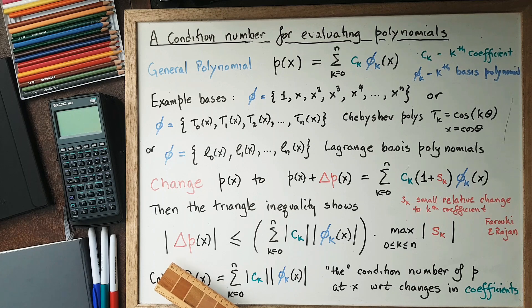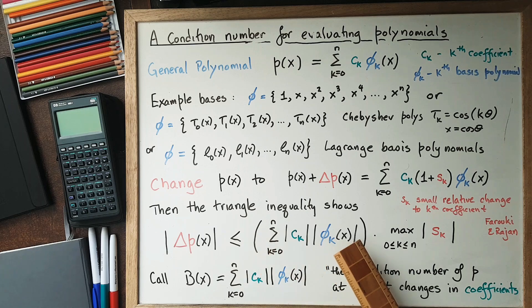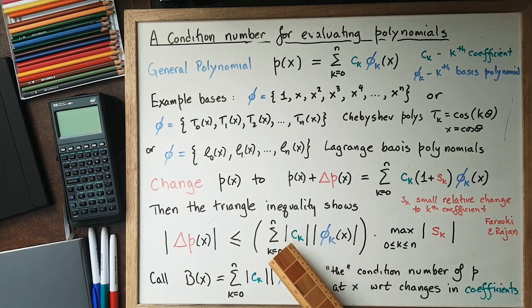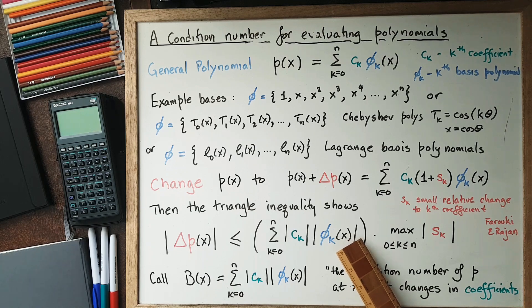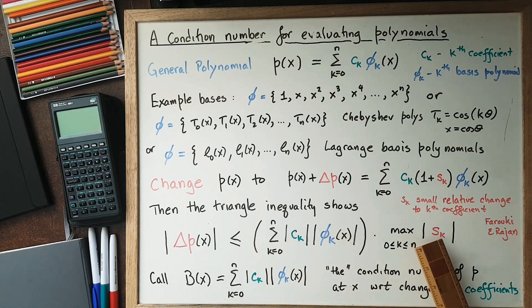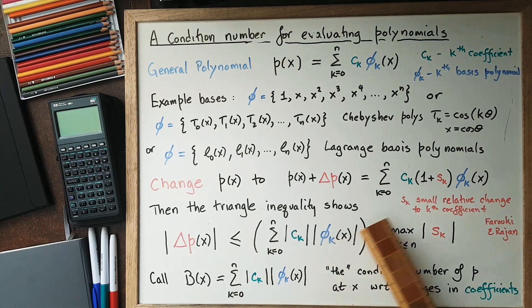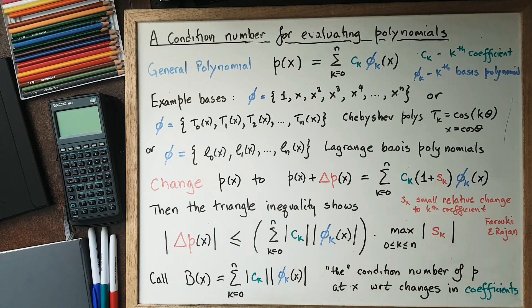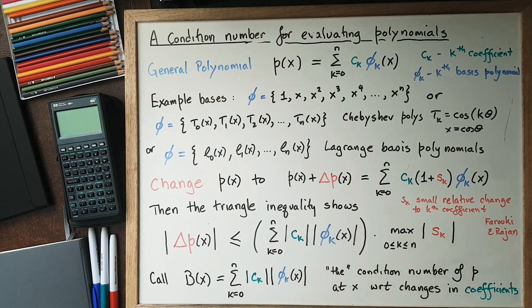Then the triangle inequality says that the absolute value of Δp(x) is less than or equal to the sum of the absolute values of all the terms. We have absolute value of c_k, absolute value of φ_k times absolute value of s_k in each one. Then we can replace each absolute value of s_k by the maximum possible value, and that'll be common, and we can pull that all out. So we have this thing which depends on the coefficients and the φ's and x, but not on the perturbations, and then this part which is purely about the small changes. We've separated something to do with the polynomial, something to do with the changes in the coefficients.